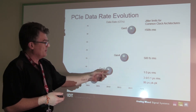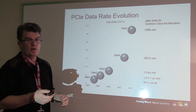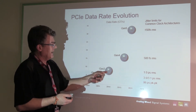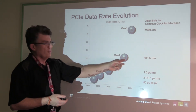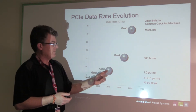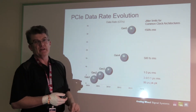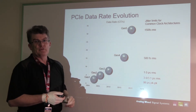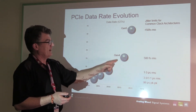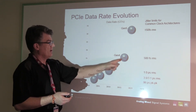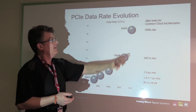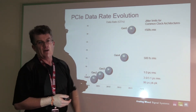Beginning with Gen 3, because the encoding for the error correction has now been fixed, Gen 4 uses the same structure and the data rate actually is doubled, as you would expect, from 8 to 16 gig. Gen 5 uses the same basic error correction structure again and the data rate is doubling from 16 to 32 gigabits per second when Gen 5 gets deployed.